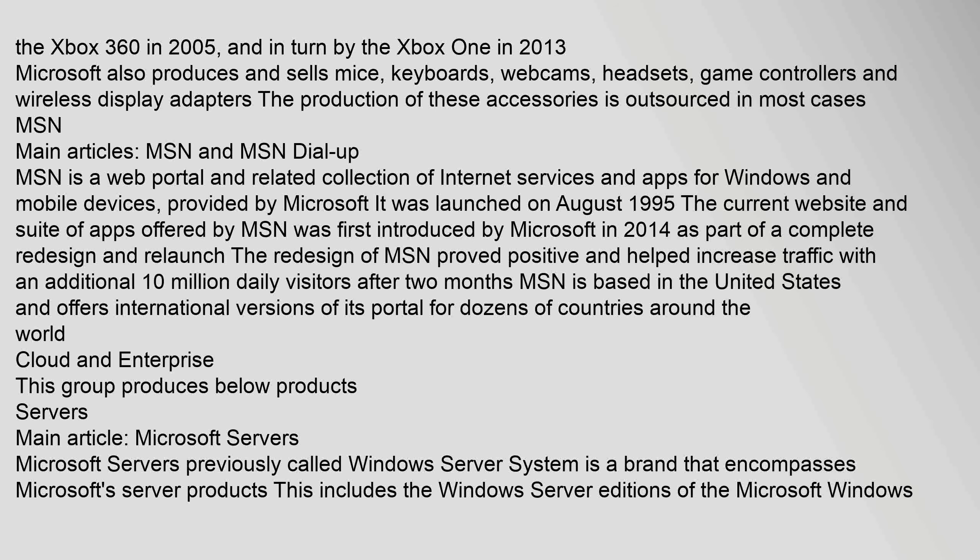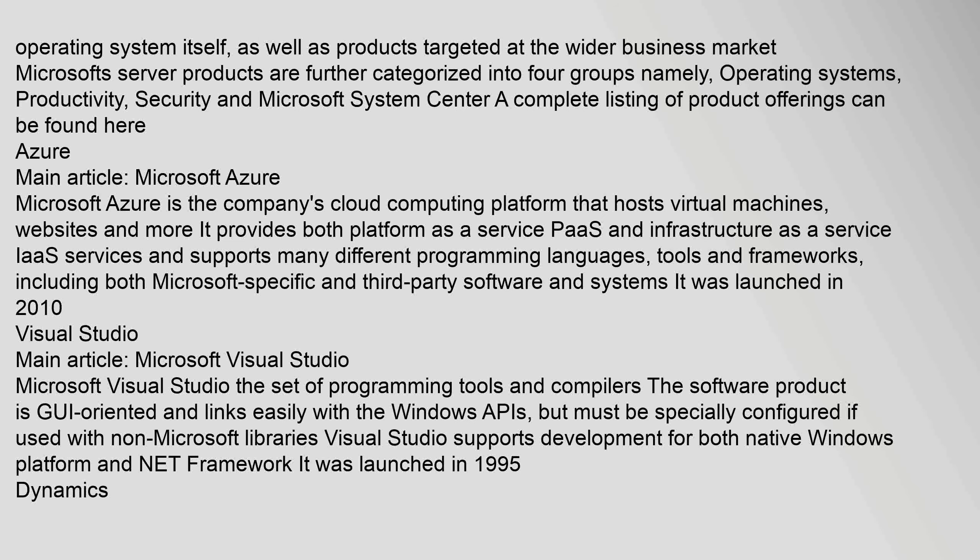The Cloud and Enterprise group produces Microsoft Servers, previously called Windows Server System — a brand encompassing Microsoft server products. This includes the Windows Server editions of the Microsoft Windows operating system, as well as products targeted at the wider business market. Microsoft Server products are further categorized into four groups: Operating Systems, Productivity, Security, and Microsoft System Center.